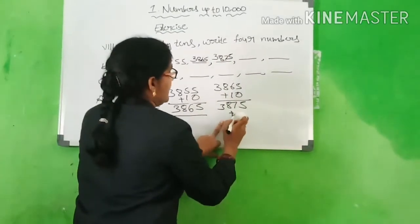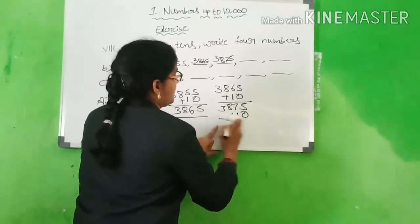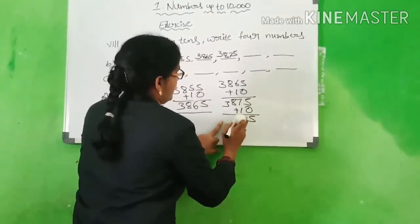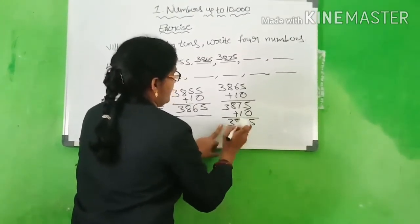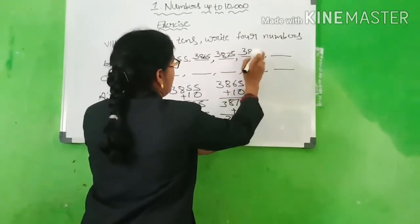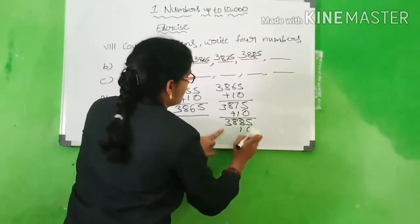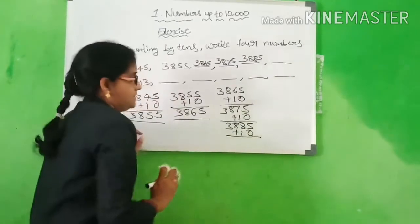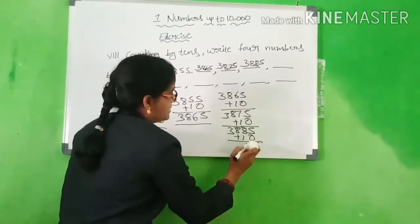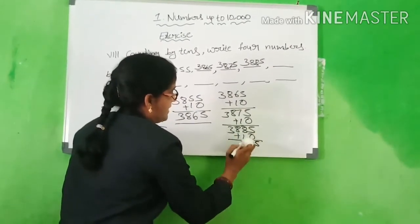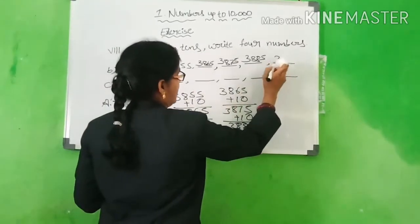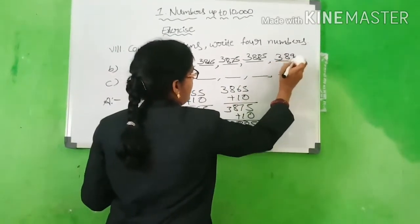Then count 10 more. 5, 7 plus 1 is 8, 8, 3. What is the answer? 3,885. You have to count the next number plus 10. 5 plus 0 is 5, 8 plus 1 is 9, 8, 3. What is the answer? 3,895.